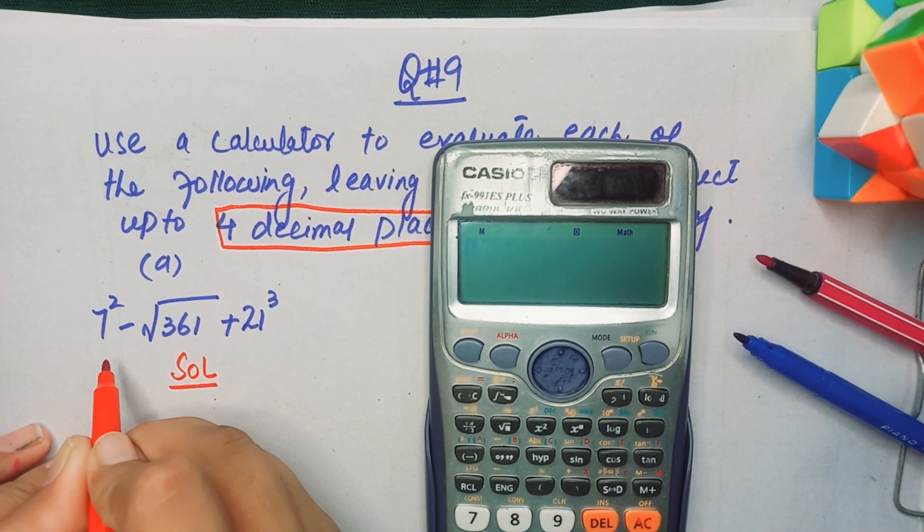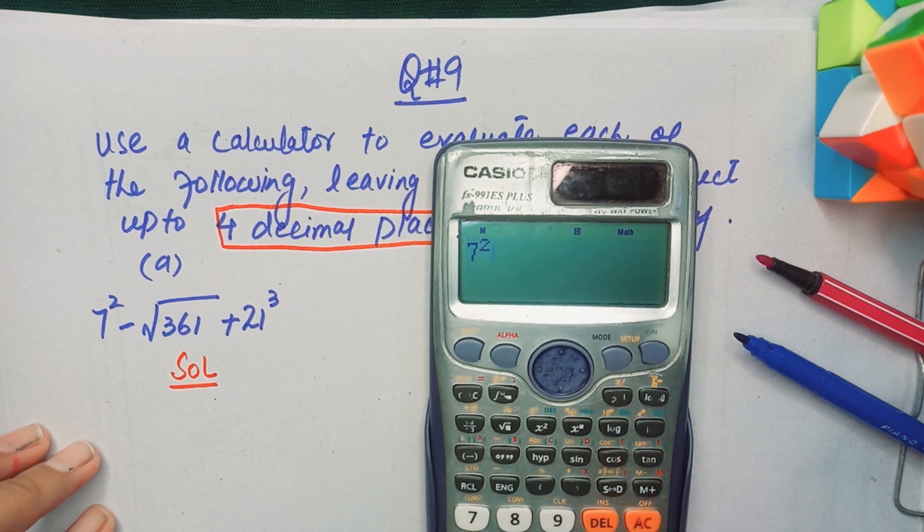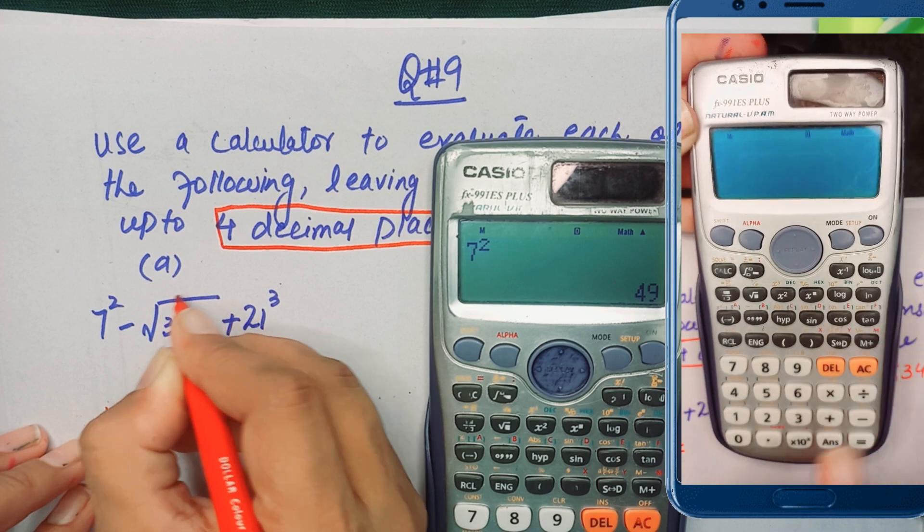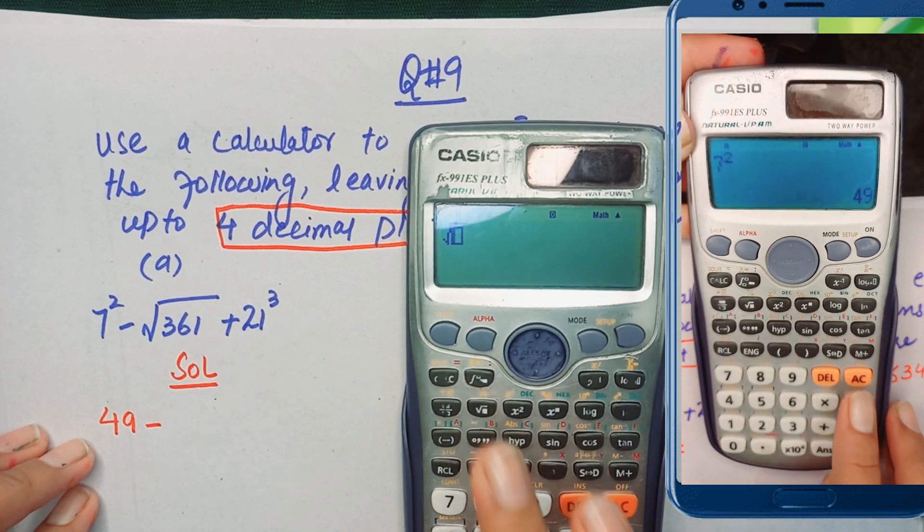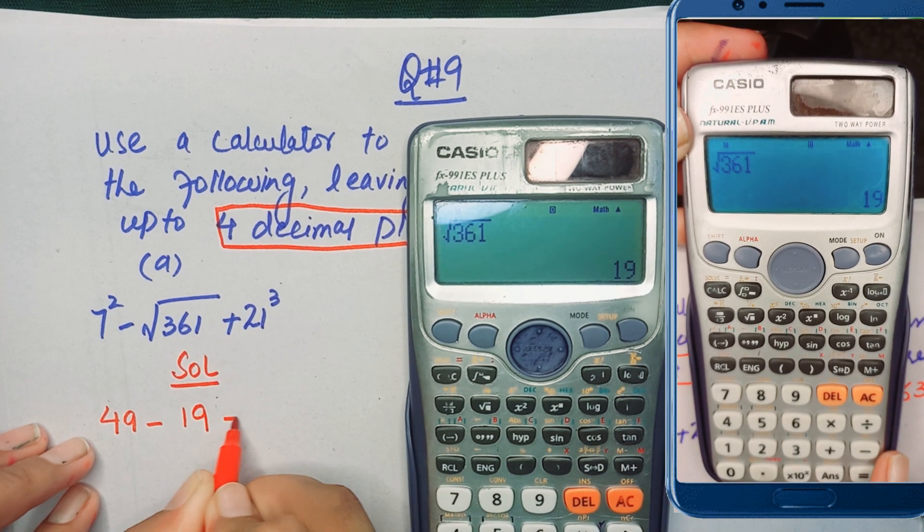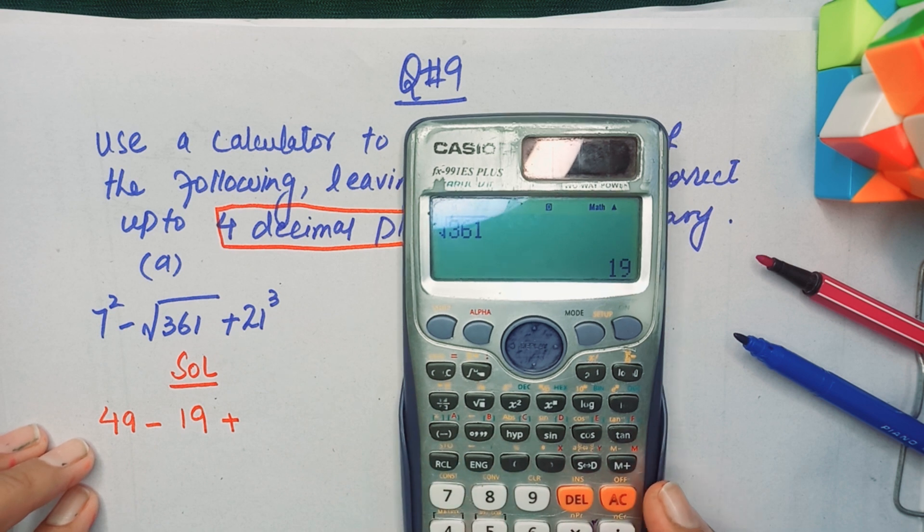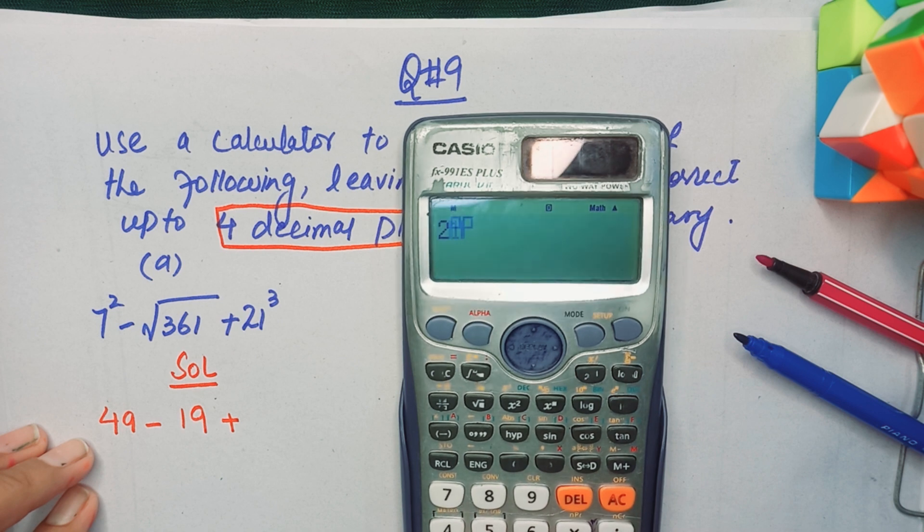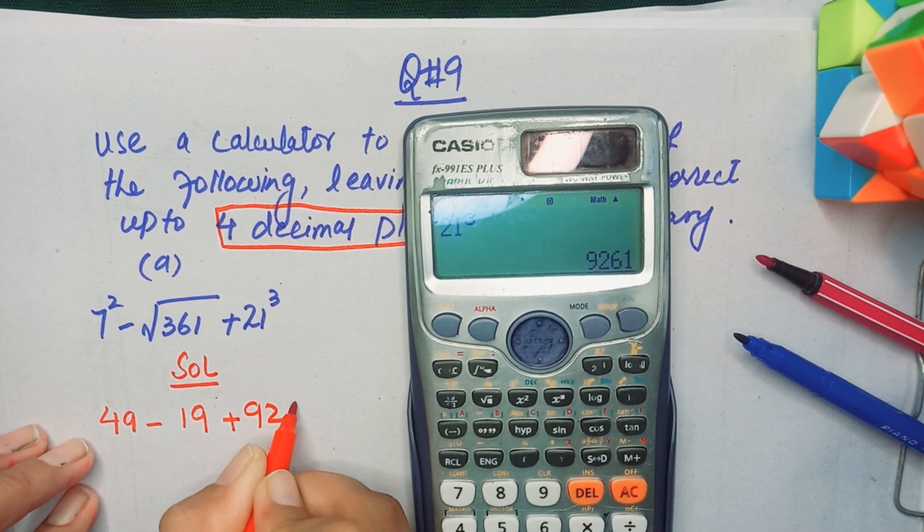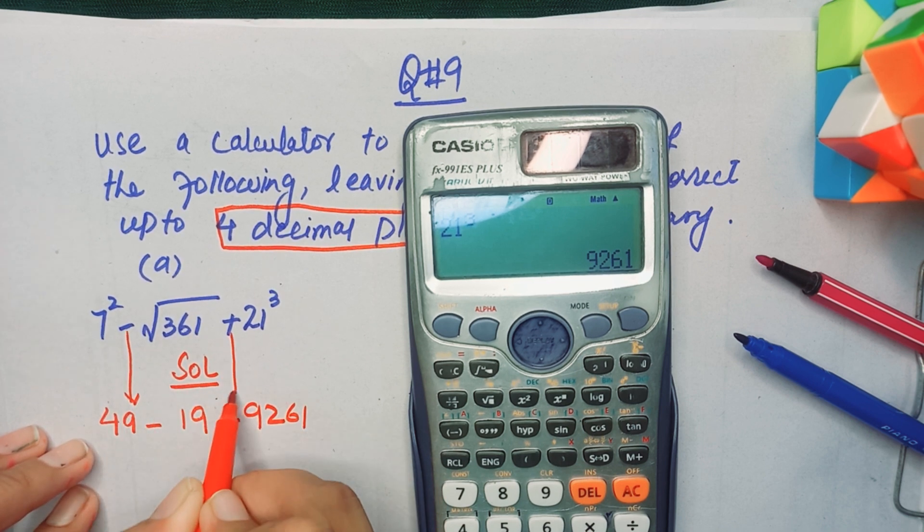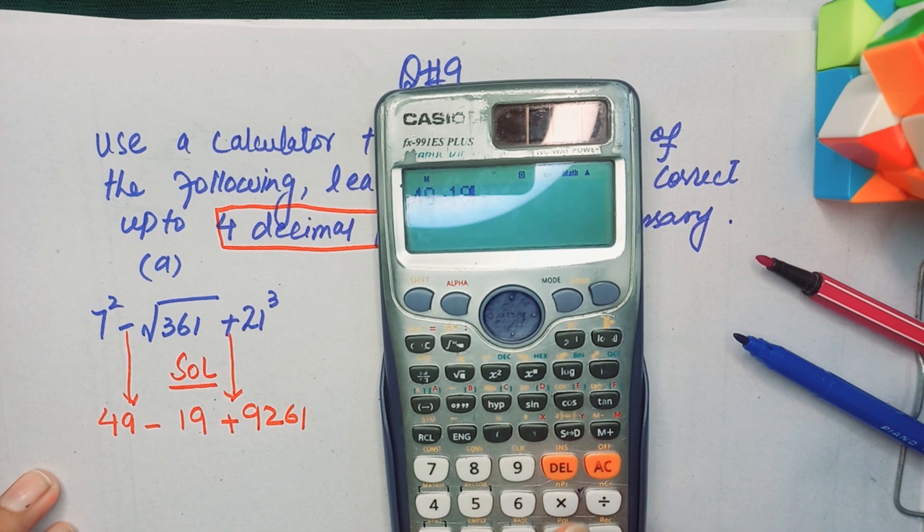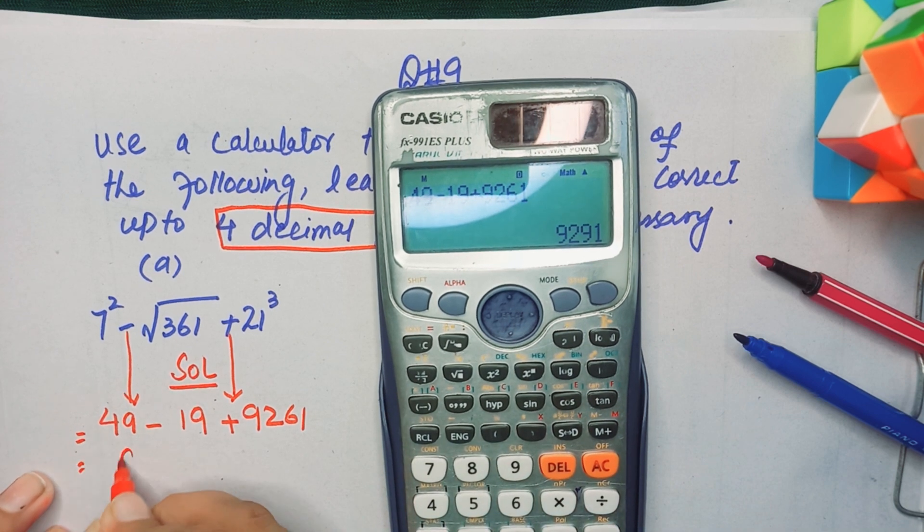We will calculate: 7 square equals 49, then there is a minus sign. Now we have to calculate square root 361, which gives you 19. Now you have to calculate 21 cube, which gives us 9261. There is a minus sign and plus sign. Now students, we will solve it: 49 minus 19 plus 9261, so you will get 9291.